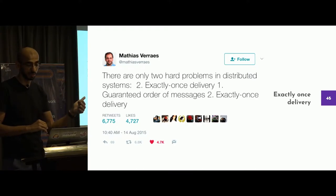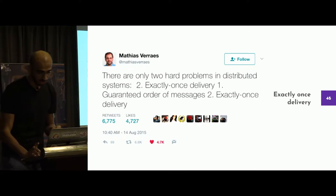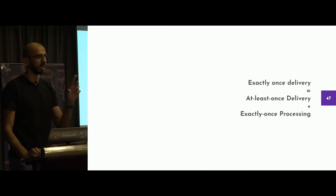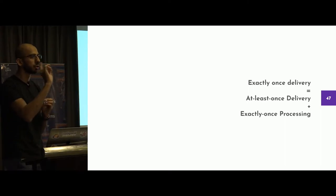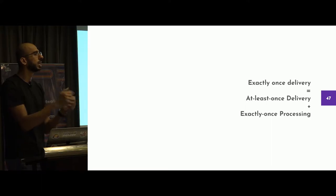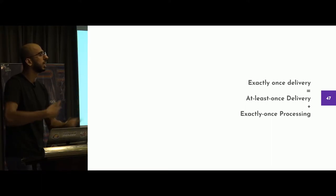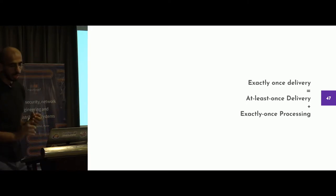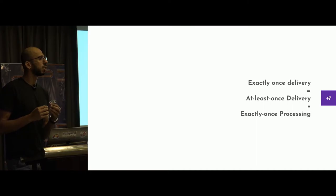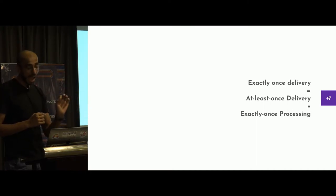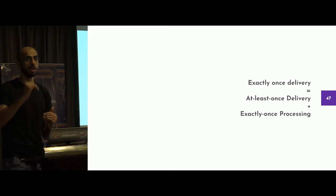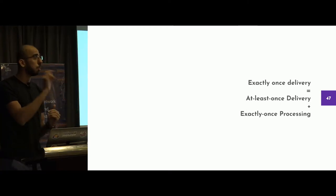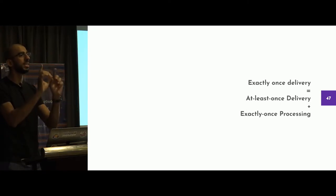There will be two hard problems: exactly once delivery, and guaranteed order of messages with exactly once delivery. The best is exactly once delivery — if there was a magical way to do this thing only once. Should I keep retrying deducting a balance or should I only deduct it once? Once — because all systems work on that. It can only be done if there is at least once delivery and exactly once processing. We've got to try again and again, but the successful operation should only be done once.